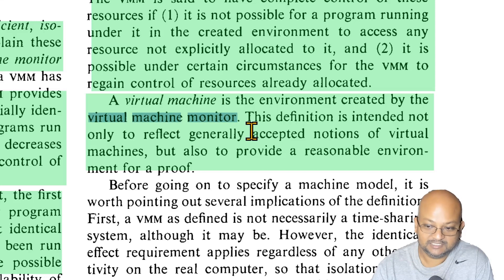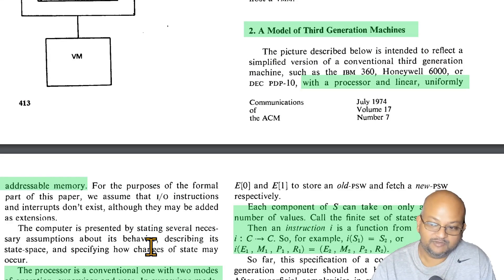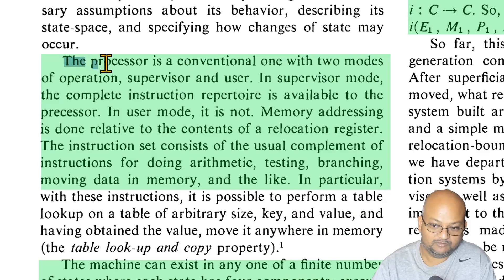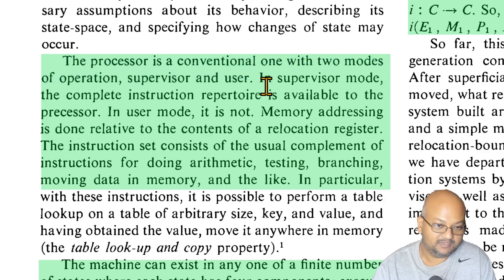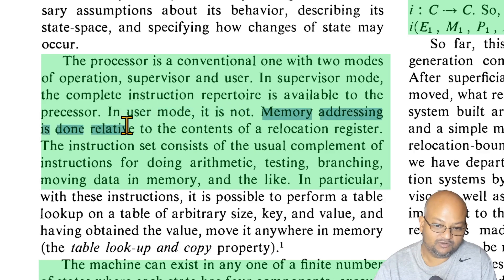All these properties are enforced and executed by a virtual machine monitor — the system that creates a virtual environment for programs to run in. We now come to defining some properties of the underlying processors. We assume processors have linear and uniformly addressable memory, and that the processor has two modes of operation: a supervisor mode and a user mode. The supervisor mode can execute the entire instruction set, whereas user mode can only execute a defined subset of the instruction set. We also have something called a relocation register, which is the base from which all memory addressing is done.